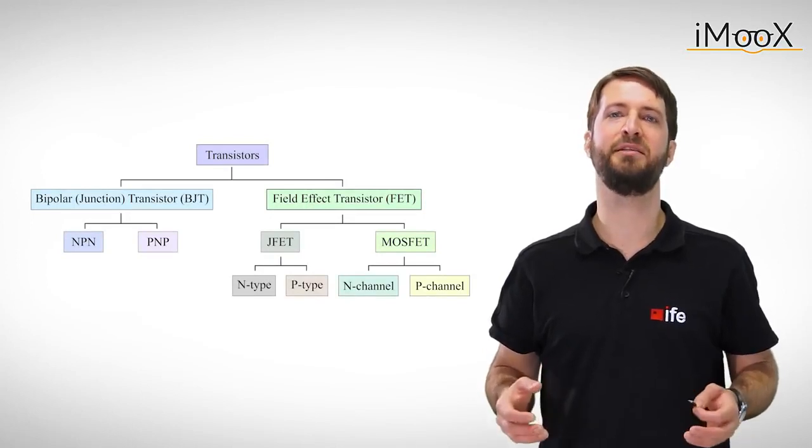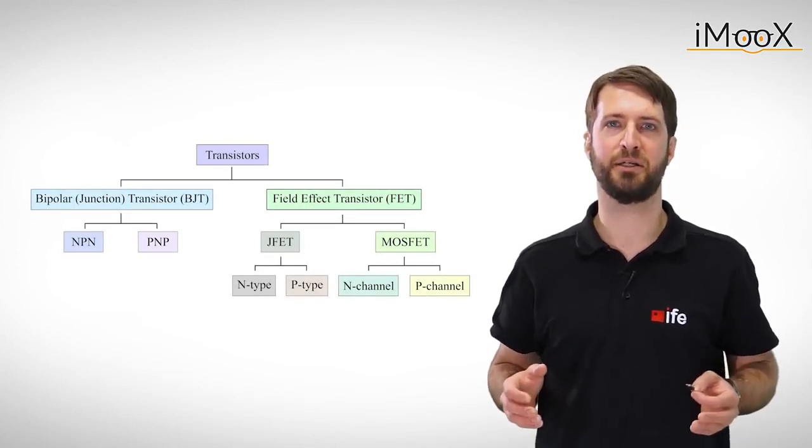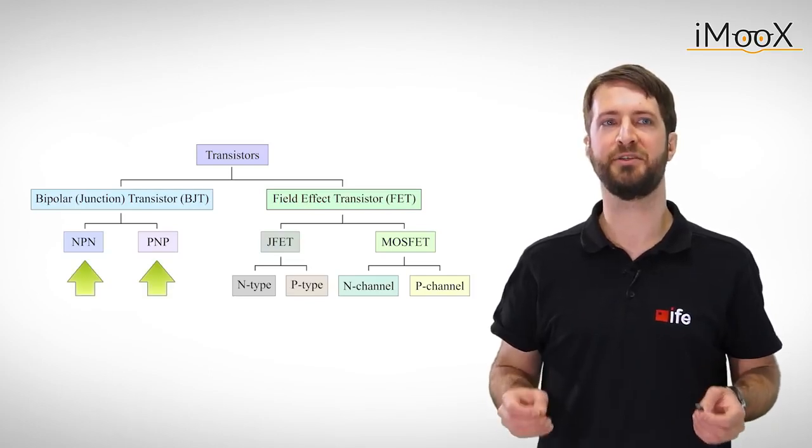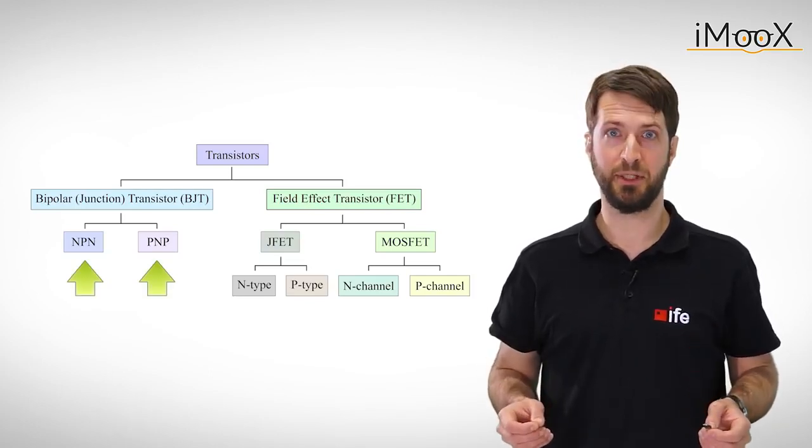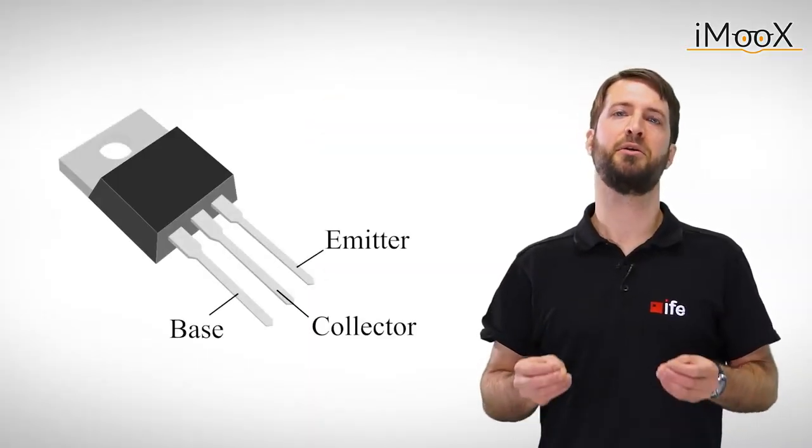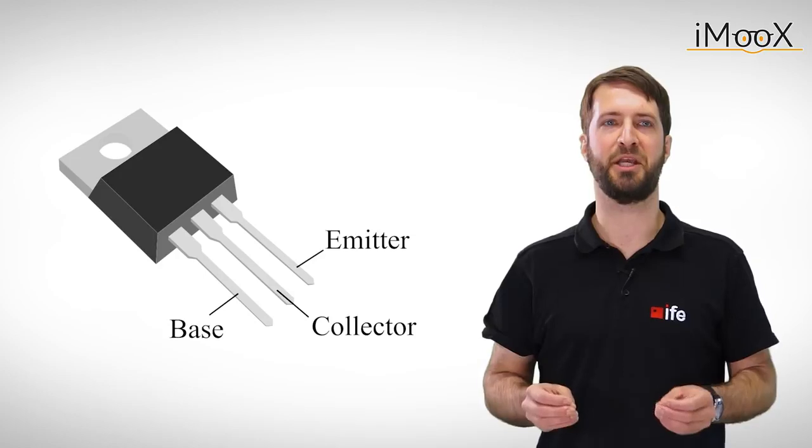Today there is a big variety of transistors available on the market. To simplify our deliberation of transistor amplifiers, we will focus on a rather simple to explain bipolar transistor, like this three-legged guy I hold in my hands. A transistor has three terminals, called emitter, collector and base.